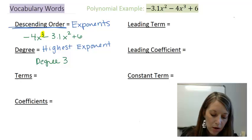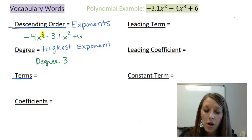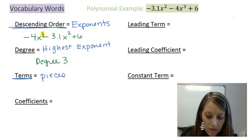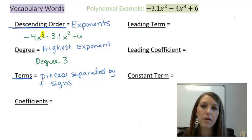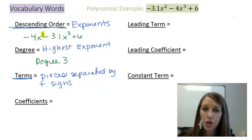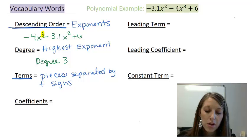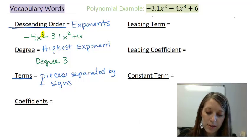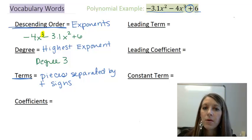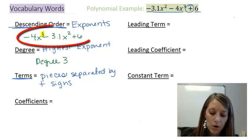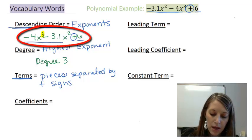Moving on to the next vocabulary word: terms. Terms are the pieces of the polynomial separated by the plus signs. You might want to pick out how many terms each polynomial has and how these terms are stuck together. If I look at my examples, I have a plus sign here, which might make you think this polynomial has two terms — one at the beginning and one at the end.